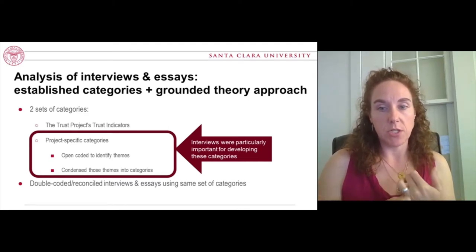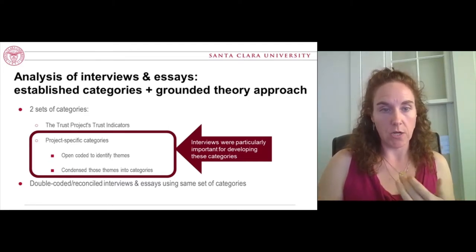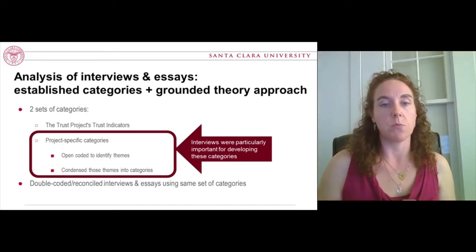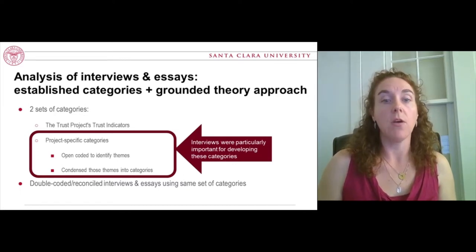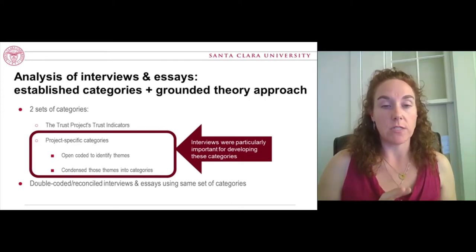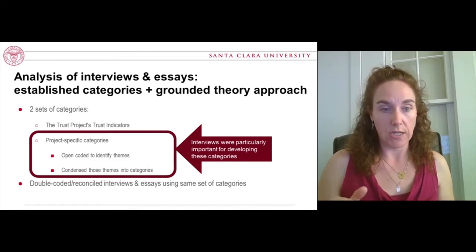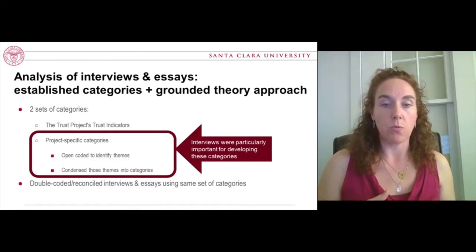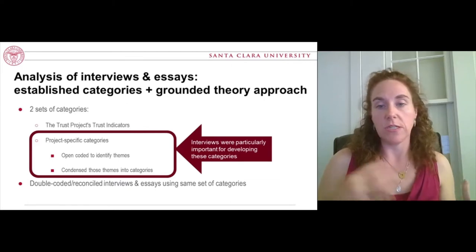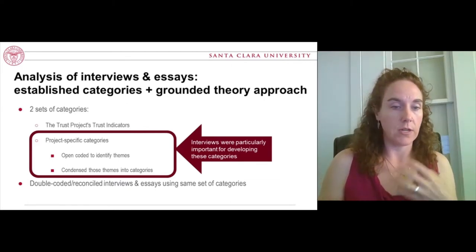The codes described how students position themselves relative to the task, which is our focus here, but also things like their self-assessment of their research and writing development, whether or not they used additional resources provided by instructors or librarians, and how they rated the quality of their writing and information literacy training prior to taking the course. Every essay and interview was assigned to two research team members, and we each rated the interview or essay according to each trust indicator and each project-specific category. All disagreements were reconciled via discussion and review of the data. For project-specific categories, participants were coded in a binary way — either they did or did not identify themselves according to the category.